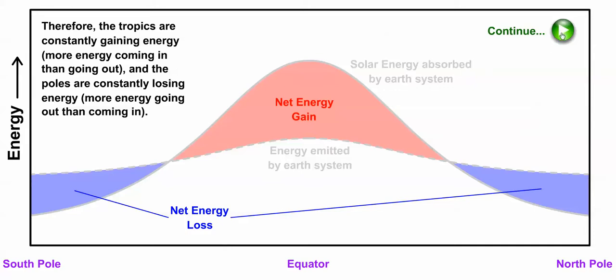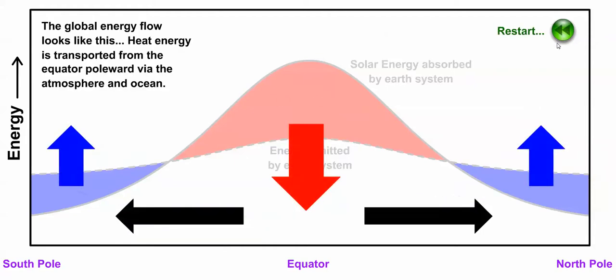And the reason why is that energy gets transferred throughout the earth's system. Energy from the tropics gets transported from low latitudes toward the poles by the atmosphere and ocean to help keep the system balanced and prevent runaway temperature increases in the tropics and decreases at higher latitudes.